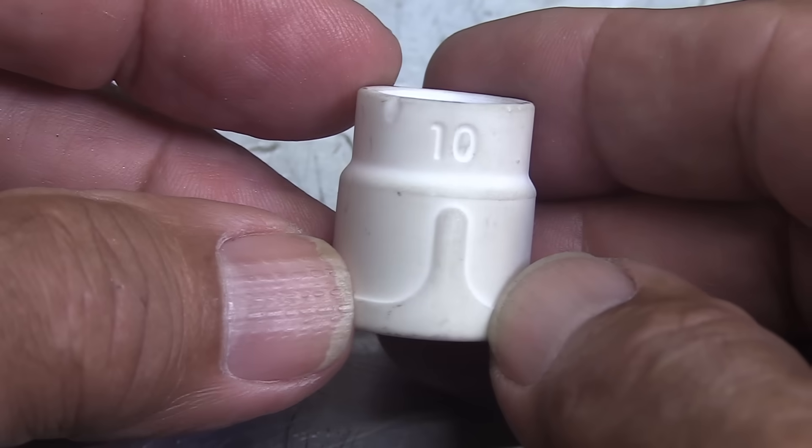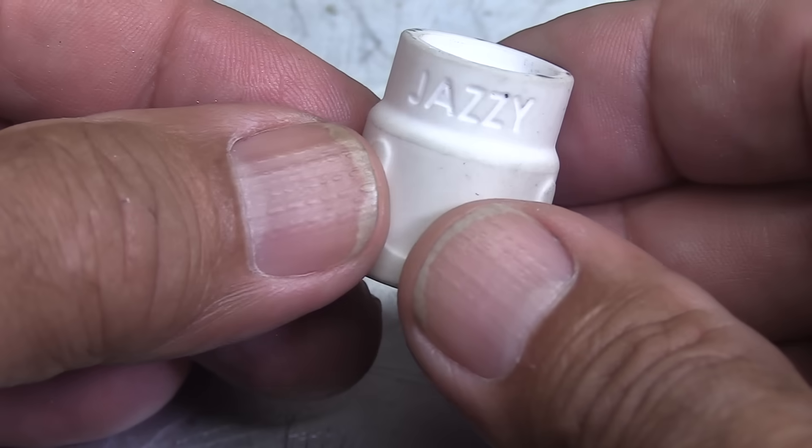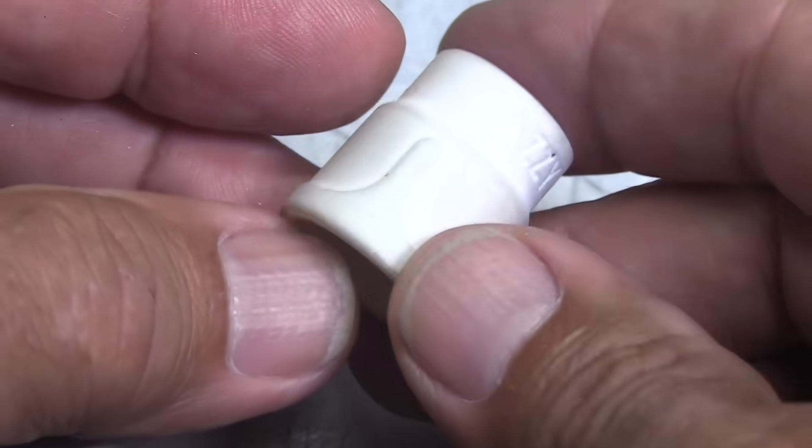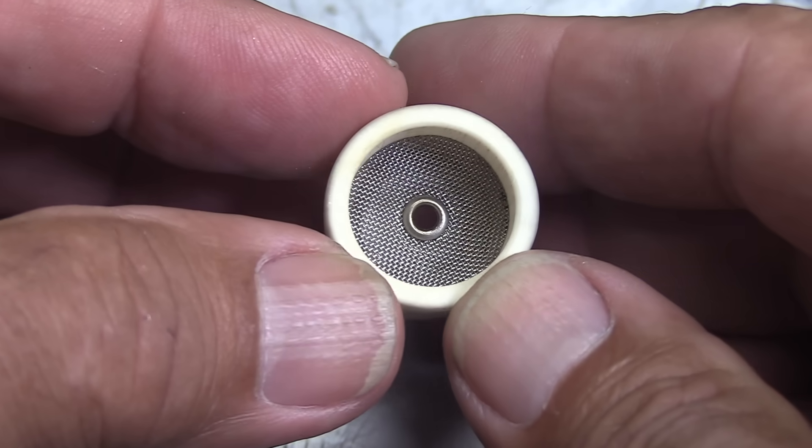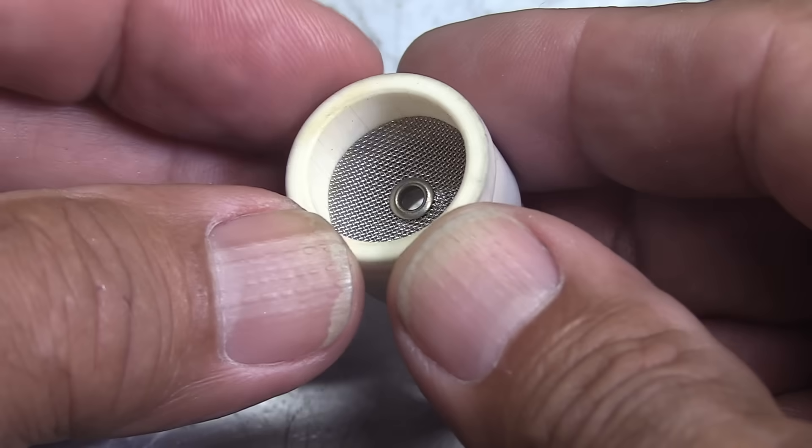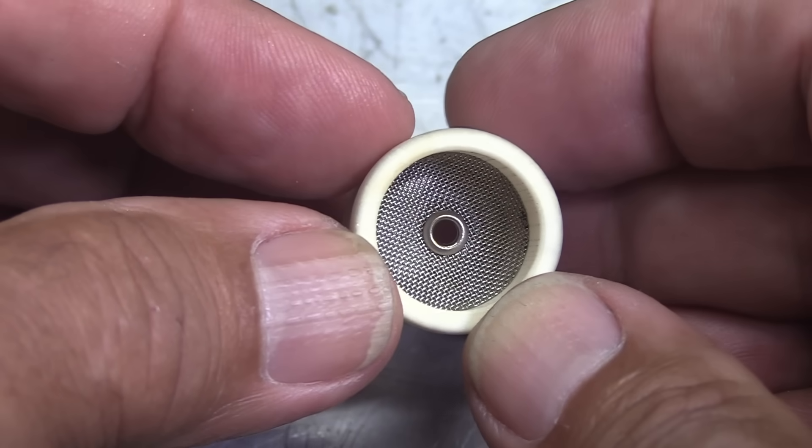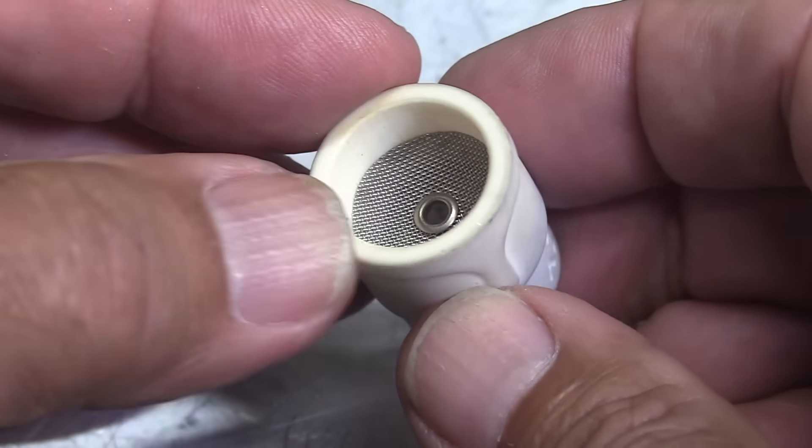One of my favorite TIG cups for chromoly, stainless steel, and Inconel is this number 10 ceramic cup called a Jazzy 10. It's got a two-layer diffuser in there that, when you use this along with the gas lens collet body, provides great shielding and lets you have a really long stick out.